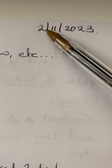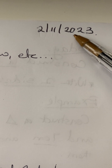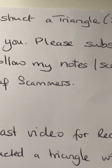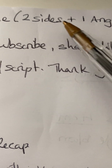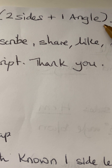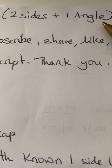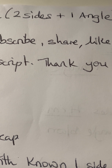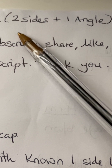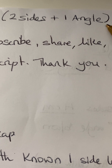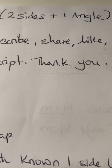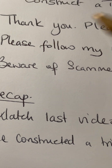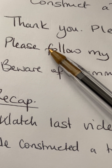Today is the 2nd of November 2023 and we are looking again at constructing a triangle. Yesterday we were given two angles and one side. Today we have two known sides and one angle — that is the information we have.